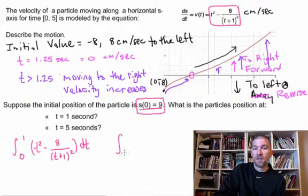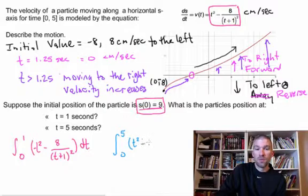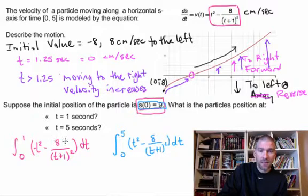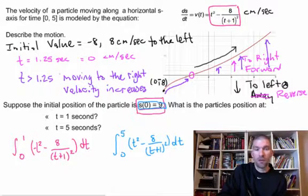If we want to know where our particle is after 5 seconds, let me change colors here, then we just go from 0 to 5. Remember, when you integrate velocity, you get position. That's the answer to the question we're trying to solve. So this would be t squared minus 8 over t plus 1 squared dt. Those are the problems we're going to try and solve. Keep in mind, at the end, we're going to have to deal with the 9 because that's where we started from.